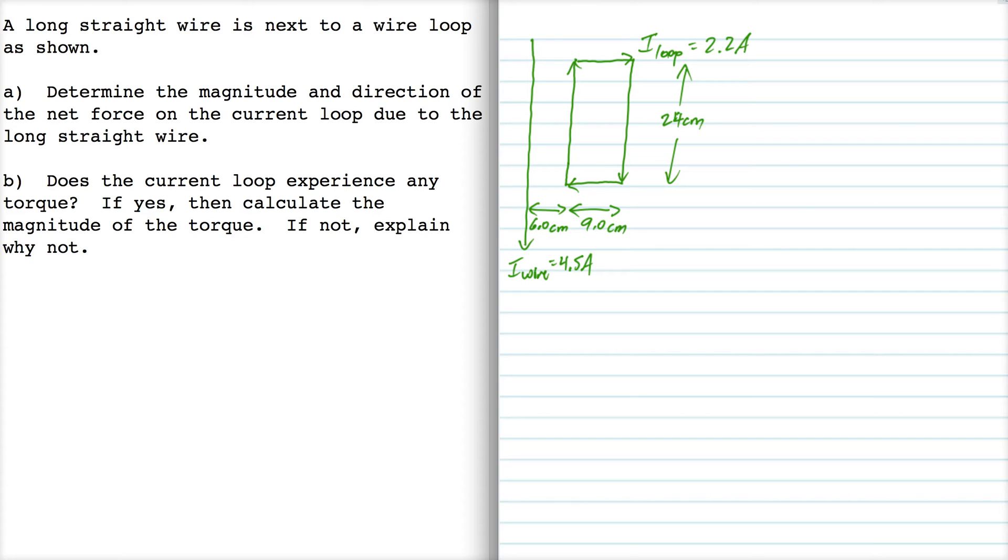Well, the wire here has a magnetic field. Due to the right hand curl rule, on this side the magnetic field is into the page, and over on this side the magnetic field is out of the page.